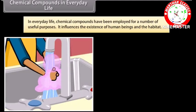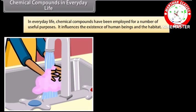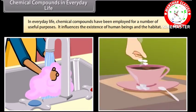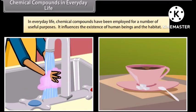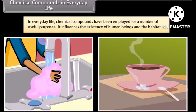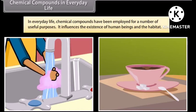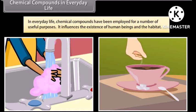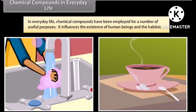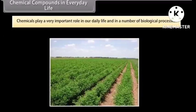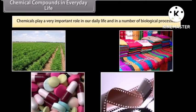In everyday life, chemical compounds have been employed for a number of useful purposes. For example, sugar is used to sweeten tea, soaps are used for washing and bathing purposes, etc. It influences the existence of human beings and their habitat. Besides those, a number of compounds find application in agriculture, textiles, medicines, photography, etc. Thus, chemicals play a very important role in our daily life and in a number of biological processes.